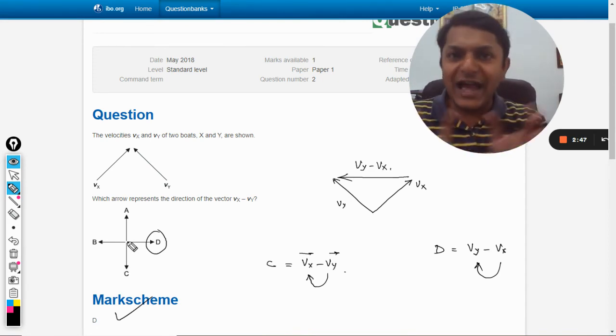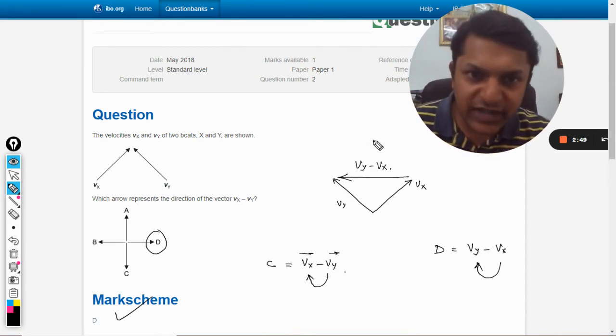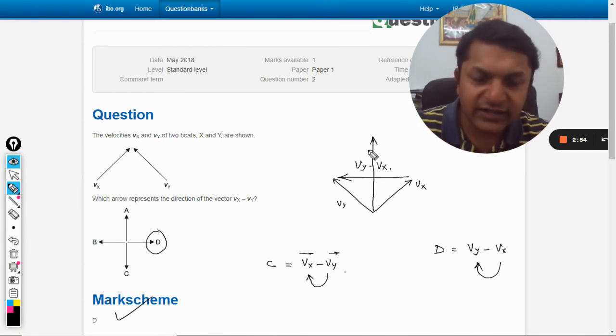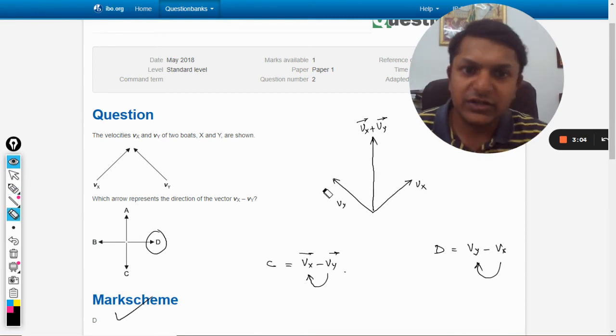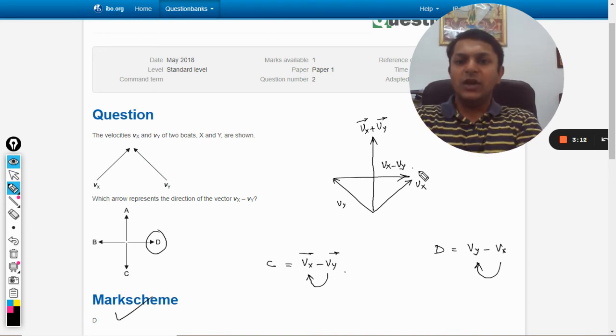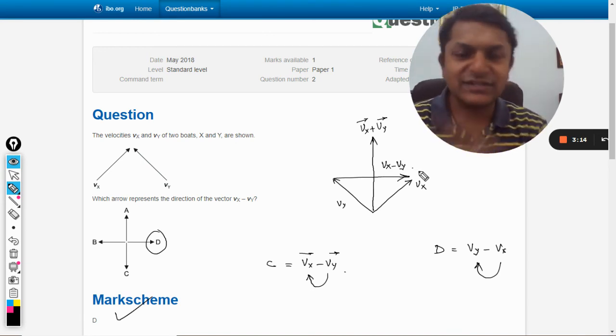I hope this is very clear to you. If we add these two, I am just telling you, if we add these two, this is the resultant that we are going to get. This vector will be vx plus vy, and these are the subtracting vectors. So this will be the other vector, vx minus vy. Okay, so with this, all the best. Bye.